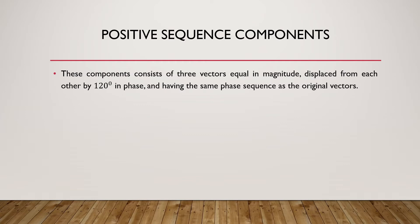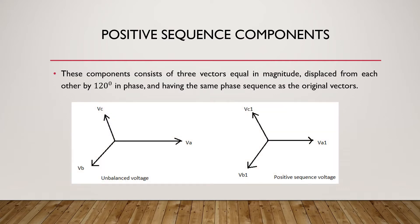The original vectors refer to whatever vectors exist in the original unbalanced three-phase system. The first figure represents the unbalanced voltage of a three-phase system. The second figure represents the positive sequence voltage — equal magnitude, displaced by 120°, following the same phase sequence as the original vectors. Here you can see VA1, VB1, and VC1, representing the positive sequence components.